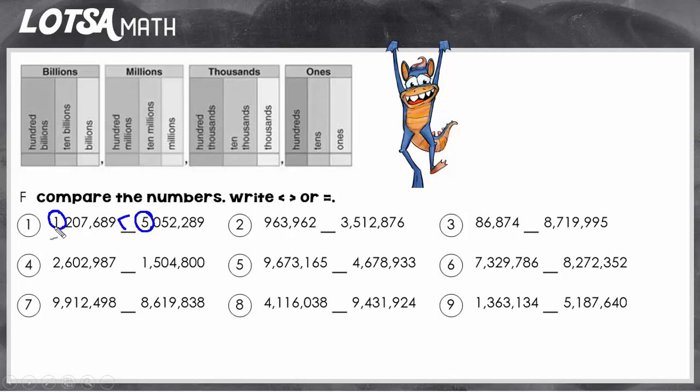So when you read this number it says one million two hundred and seven thousand six hundred and eighty nine is less than five million fifty two thousand two hundred eighty nine. But notice also that this symbol is still opened to the greater number. Even though it's called a less than symbol it still opens up to the greater number.